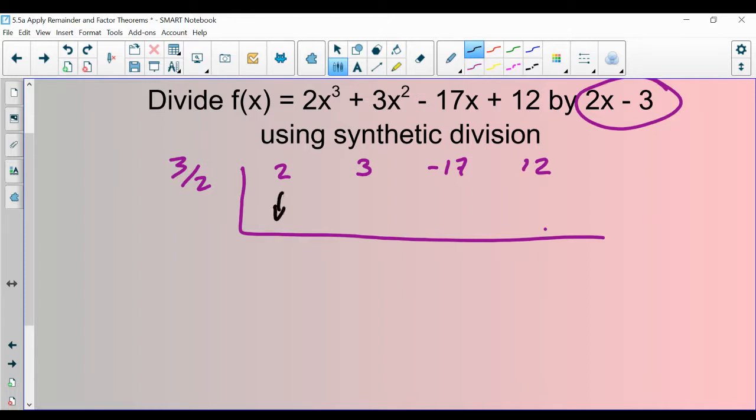First step is to drop the 2. That's going to be part of your answer. 2 times 3 halves is going to be 3. And then you are going to add these. When you add those, you get 6.